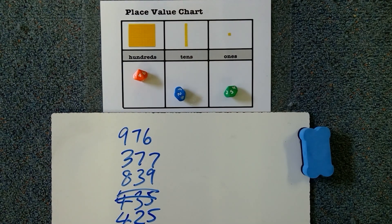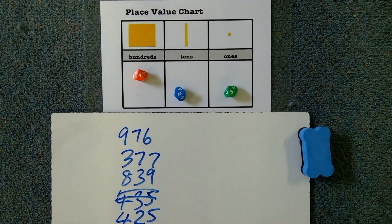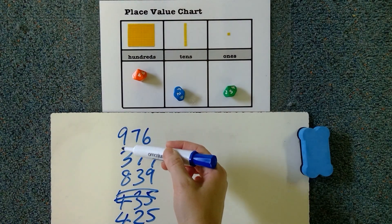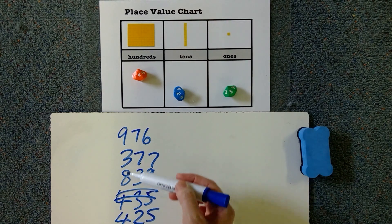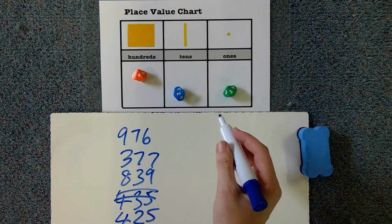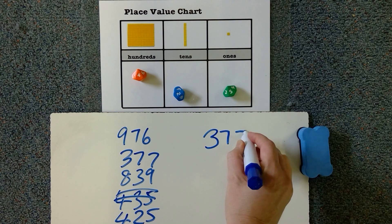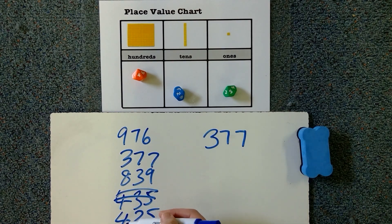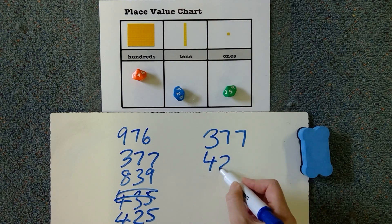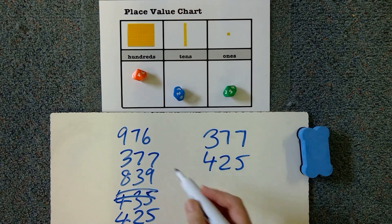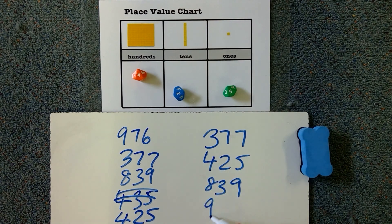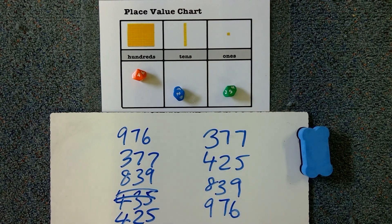So now what you are going to do is you're going to sort them into ascending order. So a good way to do that is I can look at my hundreds and go three is my smallest number there. I know that my 377 is going to go first. Looking at my values there, I can see four is my next highest one. Then I've got 800 and then 900.